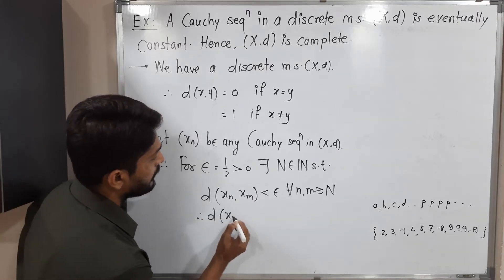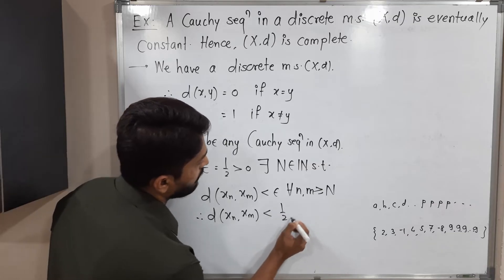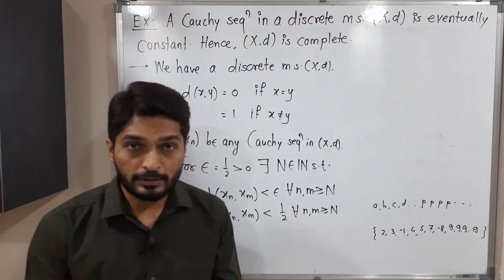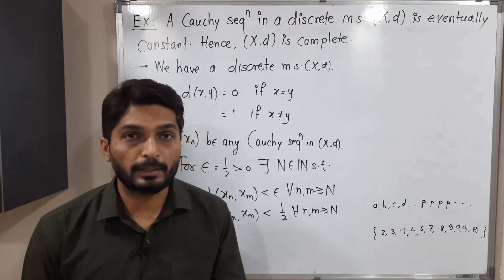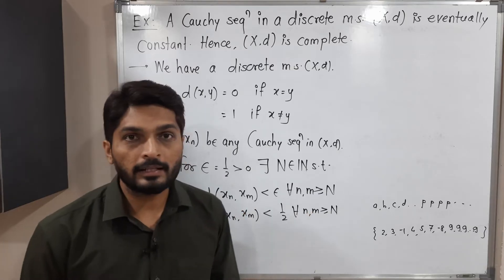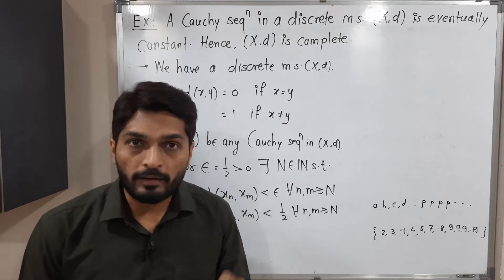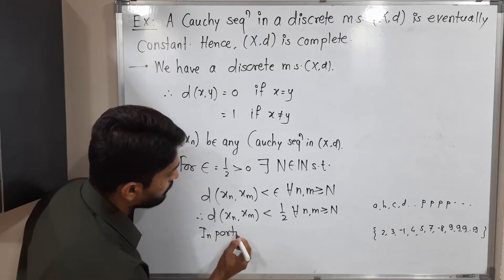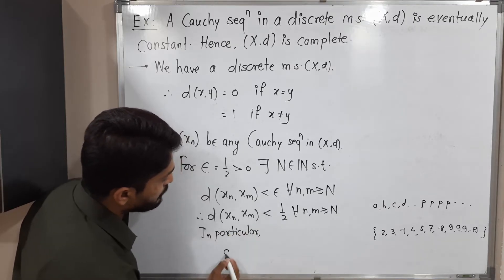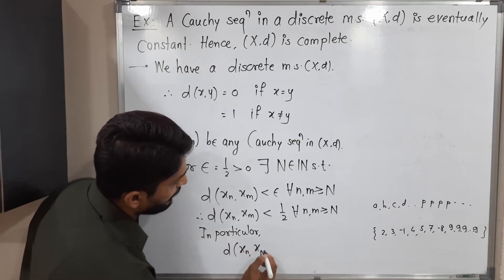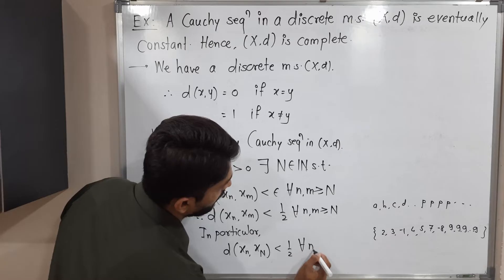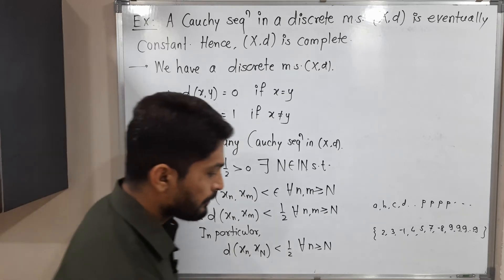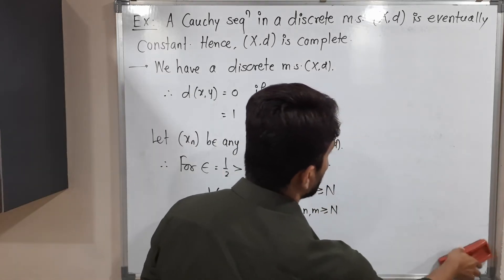Here n and m are both natural numbers greater than or equal to capital N. You can take any natural numbers n and m, but those should be ≥ N. Now in particular, I will fix m equal to capital N. So we will have d(x_n, x_N) < 1/2 for all n ≥ N — small n can vary but our m is fixed at capital N.